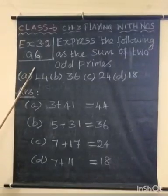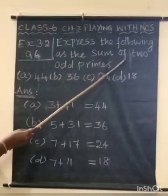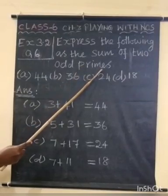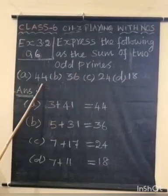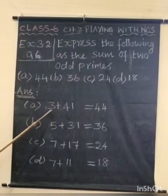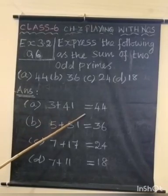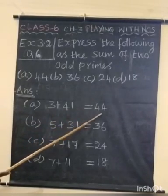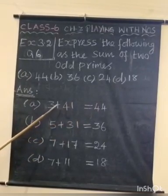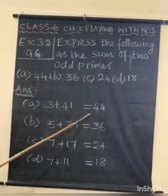Question number 6: Express the following as the sum of two odd primes. First one, part a, 44. Here 3 plus 41 which is equal to 44. 3 and 41 are odd primes. 3 plus 41 equals 44.